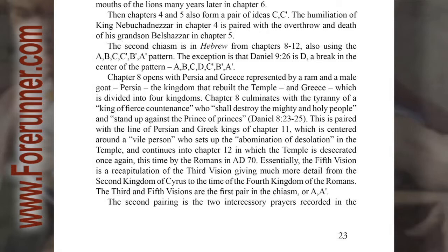The second chiasm is in Hebrew, from chapters 8 through 12, also using the ABC, C prime, B prime, A prime pattern. The exception is that Daniel 9:26 is D — a break in the center of the pattern: ABC, D, C prime, B prime, A prime.